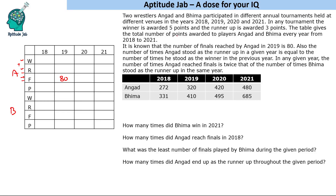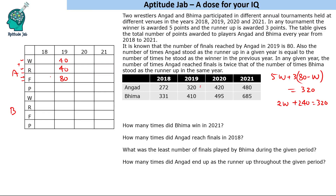Let's say Angad was winner in w matches, so he was runner-up in 80 minus w matches. Then 5w plus 3(80 minus w) equals 320 points in 2019. This gives 2w plus 240 equals 320, so w equals 40. Therefore, Angad had 40 wins and 40 runner-ups in 2019.